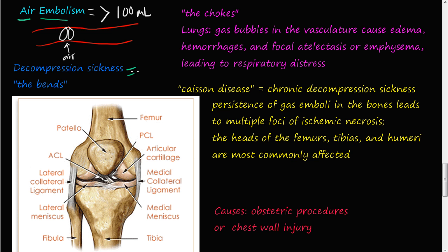In the case of the bends, you have an increase of nitrogen inside your blood supply. Scuba divers, deep sea divers, and individuals that work on construction bridges can be at risk. If you remember PV equals NRT from physics, that gas equation tells us that pressure is inversely proportional to volume — so as pressure increases, the volume of gas decreases.